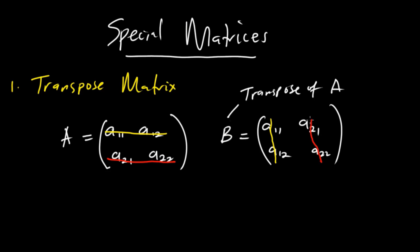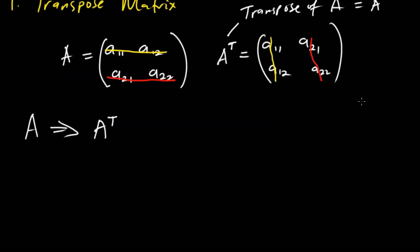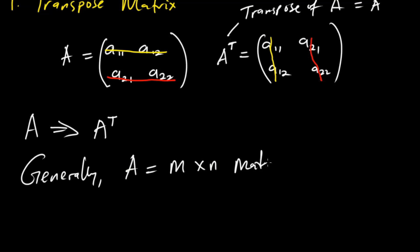The transpose of matrix A is denoted as A superscript T. So instead of writing B, we can write A superscript T. We get the transpose of a matrix by simply interchanging the rows and columns. Generally, if you have matrix A which is an M by N matrix, the transpose A superscript T will be an N by M matrix.